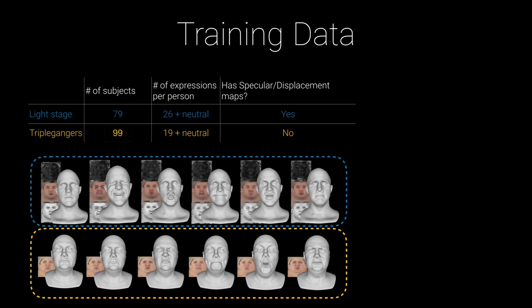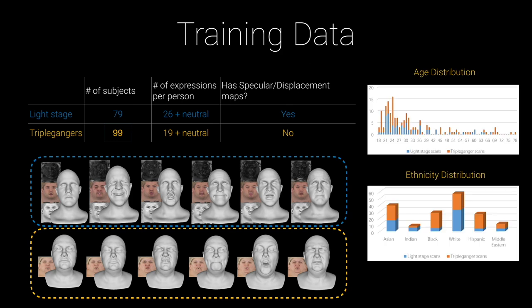Among our training data, 79 individuals are from our LightStage with 26 expressions and 1 neutral each. We transfer all TripliGanger meshes into our topology using the technique of linear morphable model fitting and Laplacian non-rigid deformation. The distribution of age and ethnicity across the two databases shows that TripliGanger data well complements our data distributions.